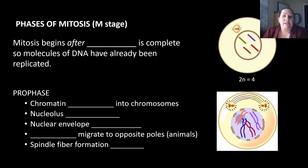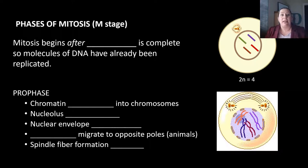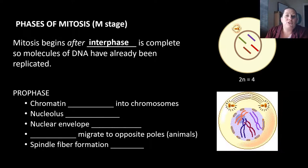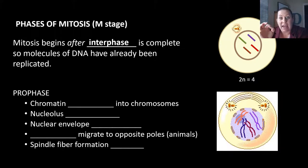Now let's talk about mitosis itself — when the cell is actually going to divide. G1, S, and G2 are preparing to divide, getting ready. Mitosis begins after interphase is complete — the cell went through G1, S, and G2. The important part is that it happens after all three of those steps because in the S phase, that's when the chromosomes are being replicated.